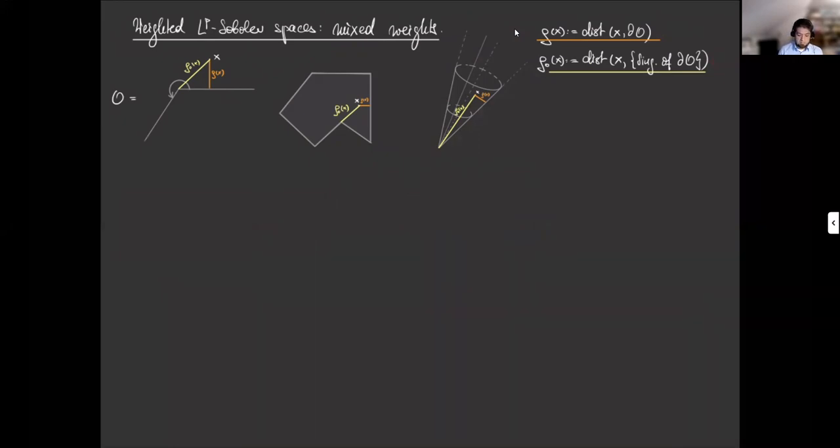You'll see a few examples here of the different distances. And our spaces are defined the following way. For non-negative integers gamma, the weighted LP sobolev space of order gamma, h gamma p theta theta, is defined as the collection of all locally integrable functions on O such that this quantity here stays finite.